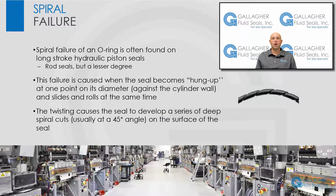Spiral failure of an O-ring is often found on long-stroke hydraulic piston seals and to a lesser degree on rod seals. This type of O-ring failure is caused when the seal becomes hung up at one point on its diameter against the cylinder wall and slides and rolls at the same time. The resultant twisting of the O-ring as the sealed device is cycled finally causes the seal to develop a series of deep spiral cuts, usually at a 45-degree angle on the surface of the seal.